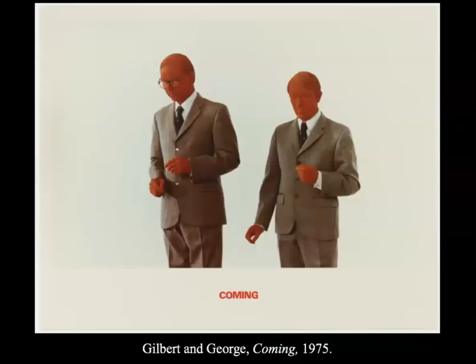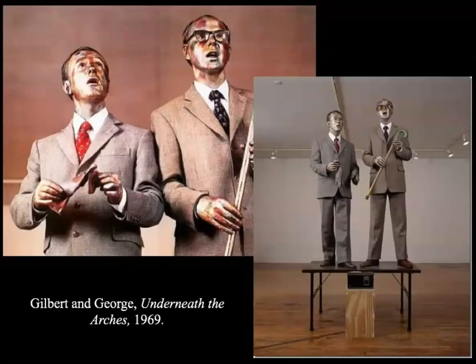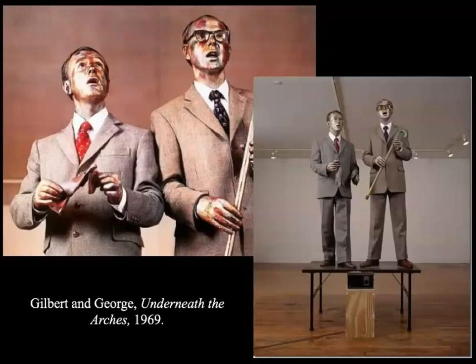Artists literally made themselves into living sculptures with Gilbert and George — they created their live body as the object itself. They made work such as Underneath the Arches in which they made themselves look like robotic sculptures, painting their faces gold along with their suits and moving in a mechanical way. It was supposed to collapse the idea between the artist and the art — the live body as the art object. Traditionally, this is an object unlike a sculpture that can't be purchased. They sang a song about homelessness and hope during the Great Depression.